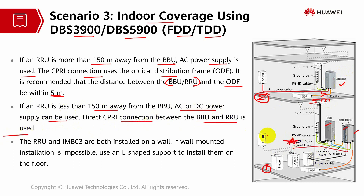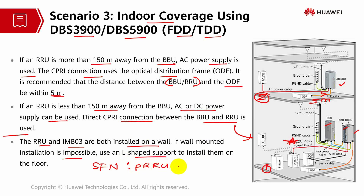For the second indoor example, the RRU and IMB03 are both installed on the wall; if wall mounting is impossible, use an L-shaped support. For this indoor solution, SFN (single frequency network) can be used when the same frequency serves one cell. You can use a combined RRU and RFU, or PRRU in a group. SFN can currently be served by a maximum of 6 RRUs, which helps expand coverage of the cell center area and reduce interference at the cell edge. This SFN solution is popular for both outdoor and indoor deployments.